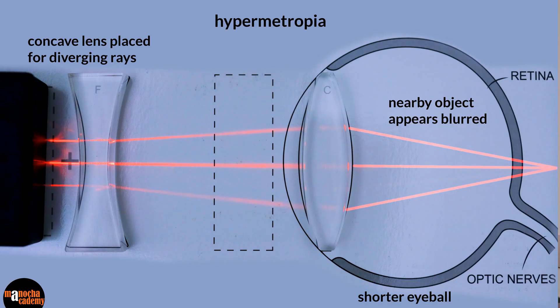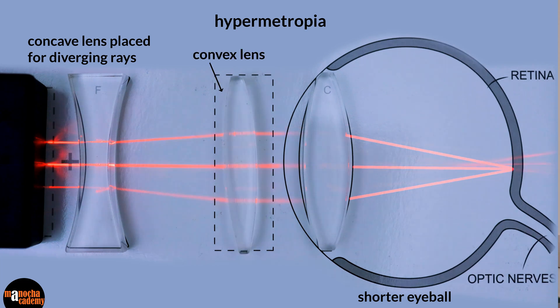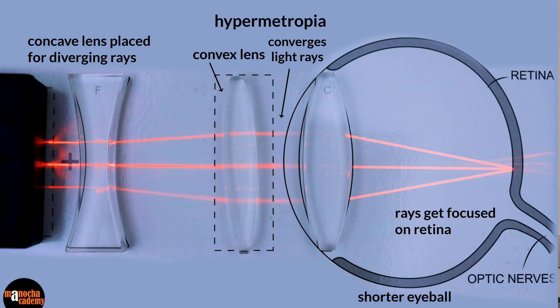What is the fix for hypermetropia? What type of lens is needed — convex or concave? That's right, this time we need a convex lens. The problem in hypermetropia is that the light rays are converging too far away, meeting behind the retina. A convex lens is a converging lens, so it converges the light rays before they enter the eye, allowing the light to focus directly on the retina and providing clear vision. The optician will prescribe convex lenses of the correct power so that you can see nearby objects clearly.